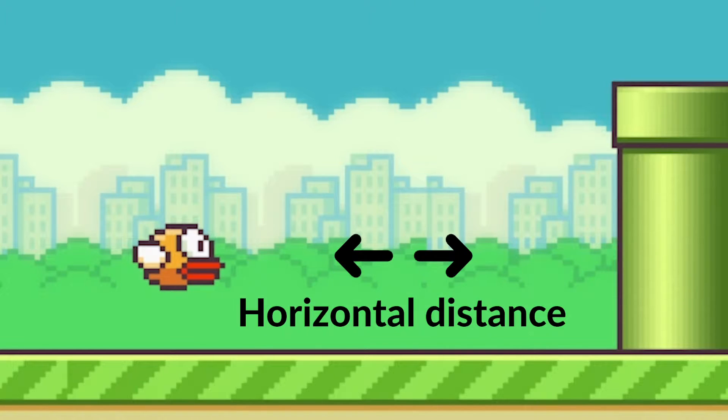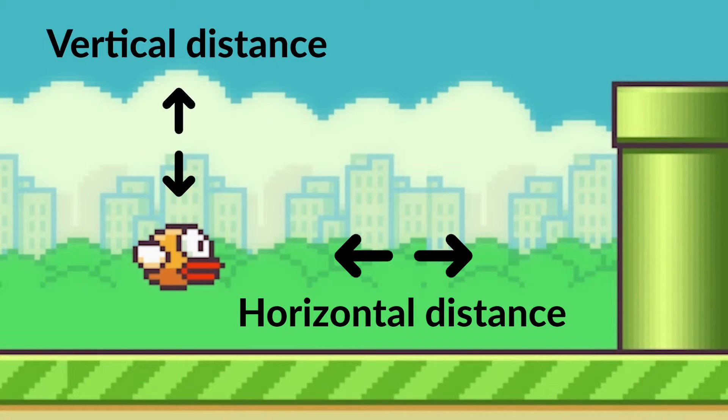In this specific environment, there are two observations per state: the bird's horizontal distance to the pipe and the bird's vertical distance to the lower pipe. Note that these are observations that we define ourselves, since in the real Flappy Bird game these numbers are not explicitly stated. The state composed of two observations will provide the agent with enough information to learn and optimize its actions. Equipped with the state, the AI will choose one of two possible actions: to flap or not to flap.